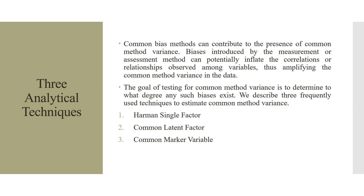Common bias methods can contribute to the presence of common method variance. Biases introduced by the measurement or assessment method can potentially inflate the correlations or relationships observed among the variables, amplifying common method variance in the data. Three frequently used techniques to estimate common method variance are: 1. Harman single factor, 2. Common latent factor, and 3. Common marker variable.